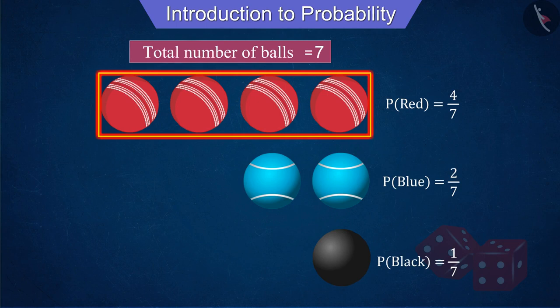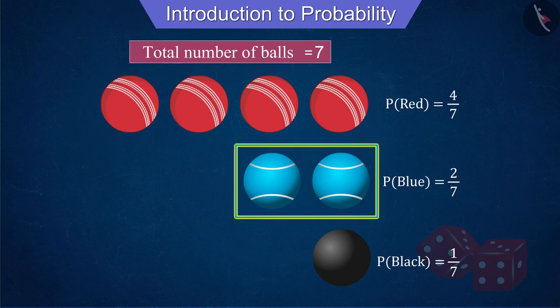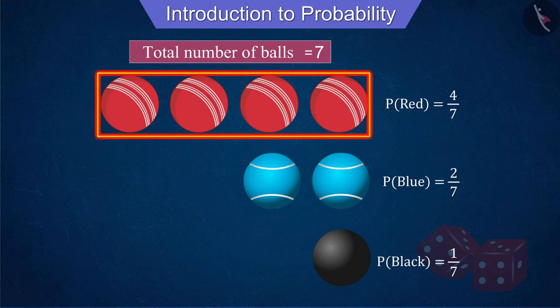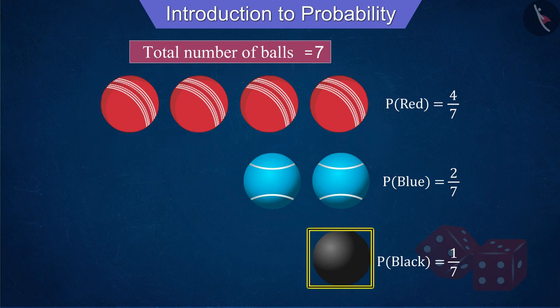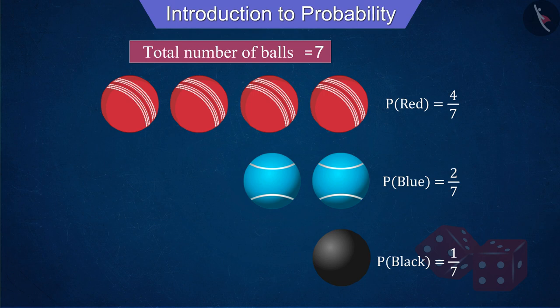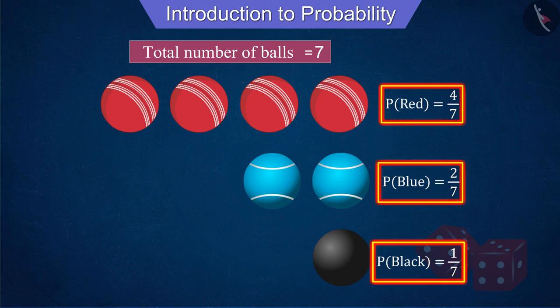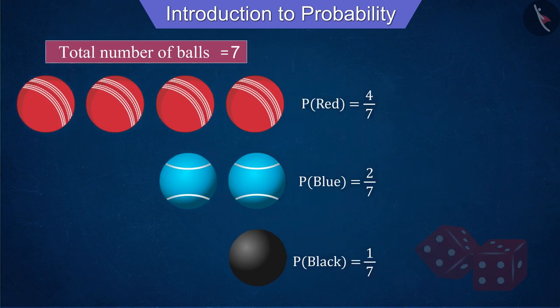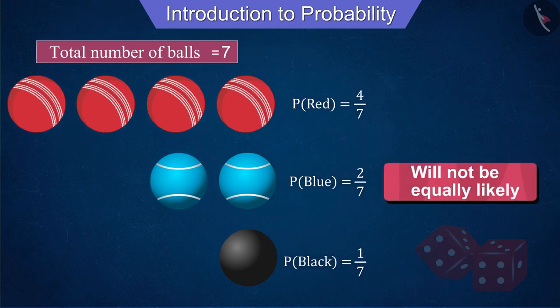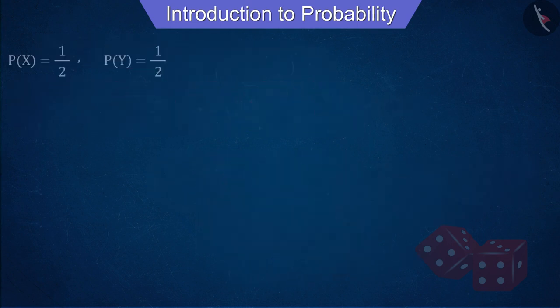Similarly, the probability of the blue ball coming out is less than the red ball and more than the black ball, and the black ball will be the least likely. You can see that the probability of the three balls coming out is different, therefore the results will not be equally likely.